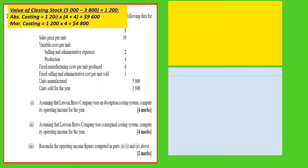Under marginal costing, or variable costing, we have the same 1,200 units, but this time we only take the variable cost of production, which is $4, as the cost per unit, and we get $4,800.